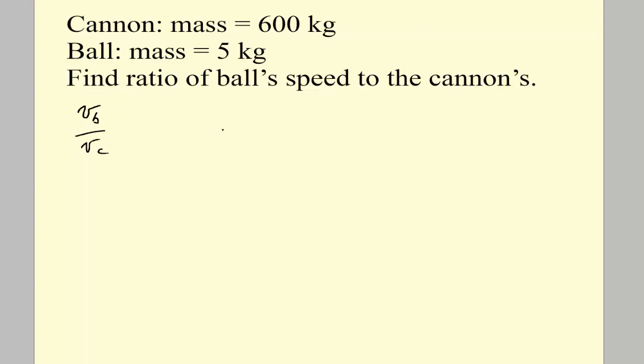So we proceed in the same way. We know that before the ball is fired, the momentum is zero. After the ball is fired, the momentum is the mass of the cannon times the velocity of the cannon plus the mass of the ball times the velocity of the ball. So the momentum of the ball is the mass times the velocity of the ball, but that has to equal zero.